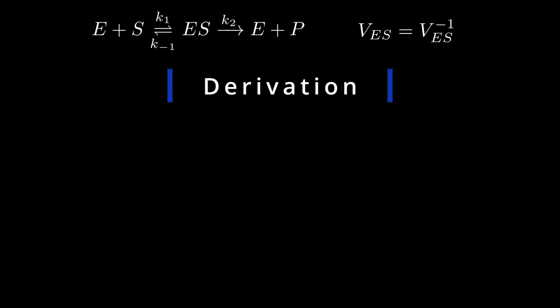Let's first assign respective rate constants K1, K-1, and K2 to our reaction scheme. According to our first assumption, that the second step of the reaction is rate-determining, we can get the rate of the reaction. The question now becomes how to express ES concentration in terms of S concentration.